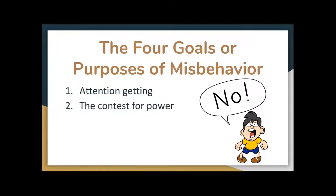The second goal is the contest for power, seen when someone feels they are being outdone and wants to show the other up. In the classroom, this may mean a student feels they don't have a voice and rebels against their teacher. The third goal is seeking revenge — they feel someone has wronged them and respond negatively. In the classroom, this may manifest as a student reacting negatively toward the teacher because they feel the teacher has wronged, embarrassed, or hurt them.